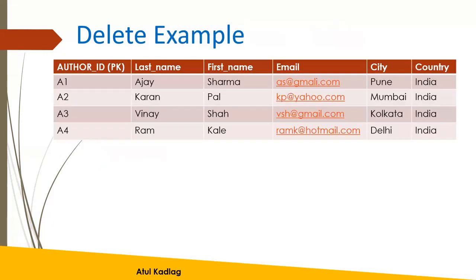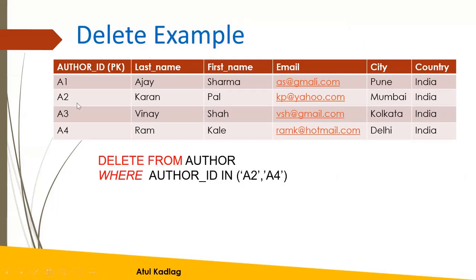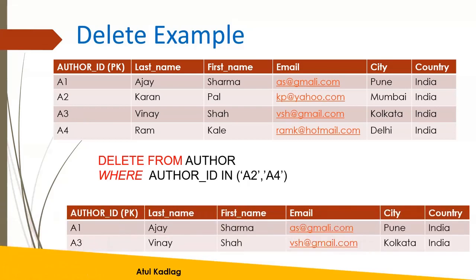As an example, if we have data in a table and wanted to delete the rows with author IDs A2 and A4, we use: DELETE FROM author WHERE author_ID IN (A2, A4). The IN operator selects those two rows and deletes them. If you just want to delete one row, you can specify WHERE author_ID equals A3. Once deleted, only the remaining rows — such as A1 and A3 — stay in the table.